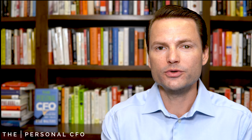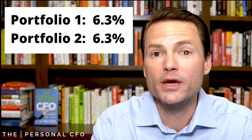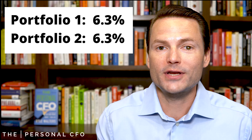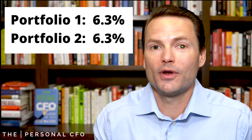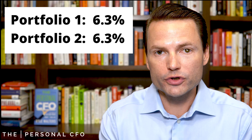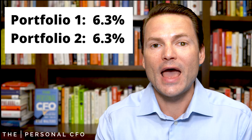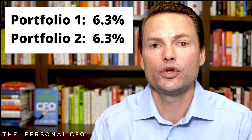I want to talk about two portfolios. Each of these portfolios has the same average rate of return at the end of 20 years — each portfolio is going to average 6.3% over the next 20 years. We're not here to discuss whether 6.3% is high or low; it's simply the rate of return. What we're talking about is the timing of those returns and how it can impact the ending value of your portfolio.